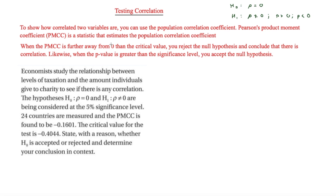You can also use the p-value approach: when the p-value is greater than the significance level, you accept the null hypothesis, which means you're saying there is no correlation.